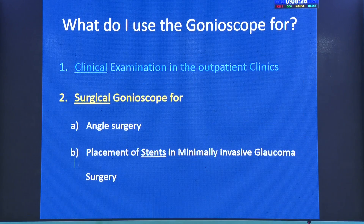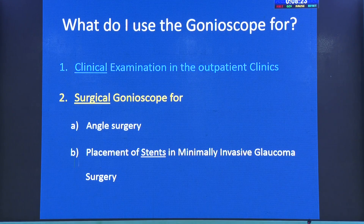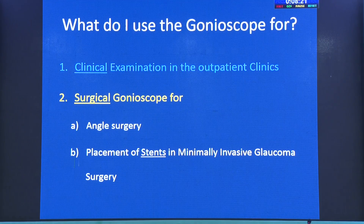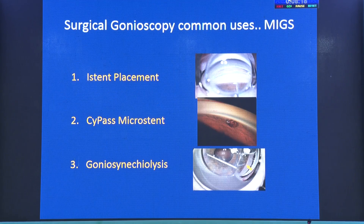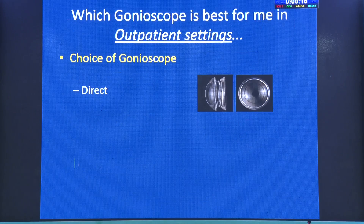Then of course we have the surgical gonioscope. It is used for angle surgeries and placement of stents, especially for MIGS — minimally invasive glaucoma surgery — which is slowly coming in.